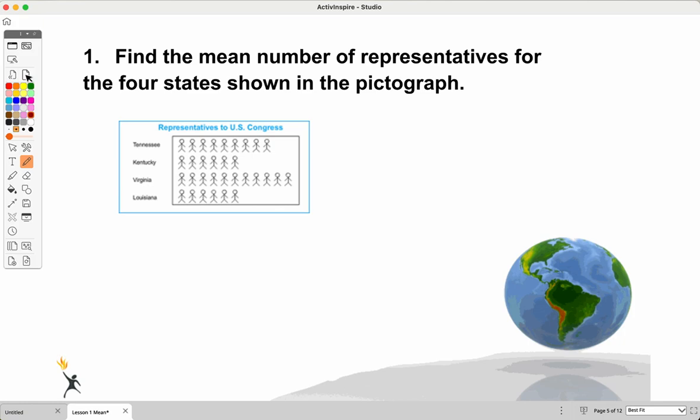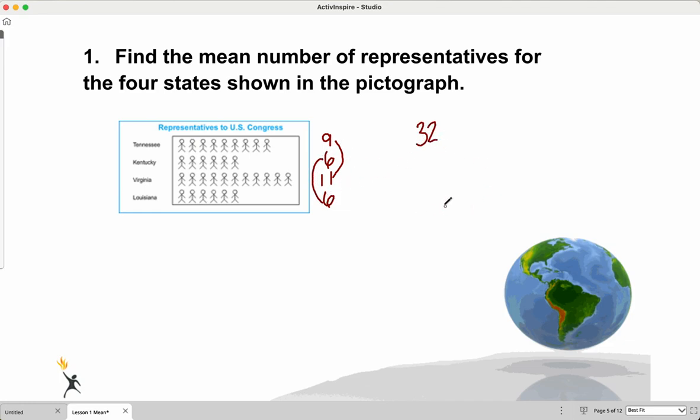So if I want to find the mean, I can find means of pictures. I can find means of numberless. In this case, most of the time, we translate it to numbers. So if we find the mean number of representatives for the four states shown below. So Tennessee, we see, has nine members. Kentucky has six. Virginia has 11 members of the U.S. Congress, and Louisiana has six as well. So what we're going to do is we're going to add those all together. Now, I'm going to do this without a calculator, because really, we don't need it with such small number sets. You will get to use a calculator, but not until you need it. So I would rearrange and think, nine times 11, nine plus 11, and six plus six. That gives me 20 plus 12 is 32.